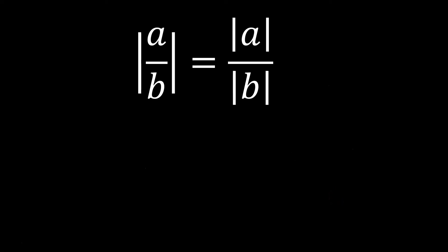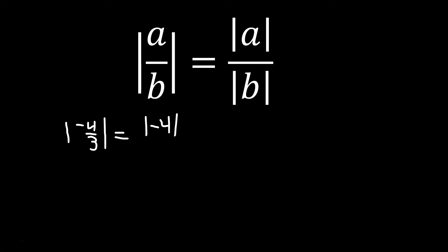Another rule: you can distribute the absolute value bars to each piece independently when dividing. So the absolute value of a over b equals the absolute value of a divided by the absolute value of b. Applying this: the absolute value of negative 4 over 3 becomes the absolute value of negative 4 in the numerator divided by the absolute value of 3 in the denominator, which gives you 4 over positive 3.